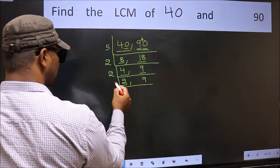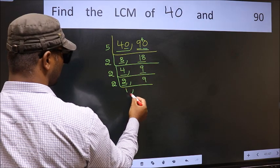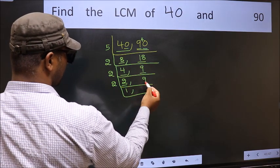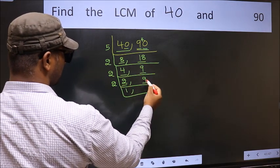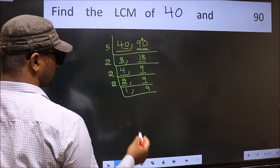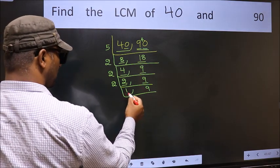Now here we have 2. 2 is a prime number, so 2 times 1 is 2. The other number 9, not divisible by 2, so we write it down as it is. Now we got 1 here.